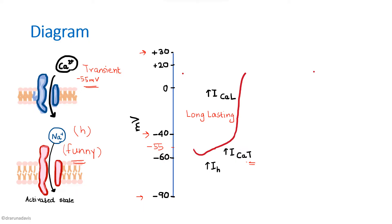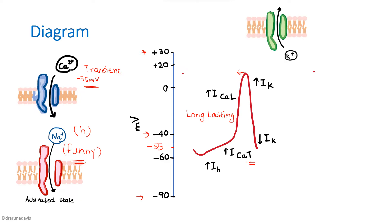The membrane potential peaks at around plus 20 millivolts, completing depolarization. Repolarization then occurs due to the opening of potassium channels causing efflux of potassium. By the end of repolarization, the potassium channel opening decreases, the potential falls, and the cycle continues — funny currents open, then transient calcium channels open, and the cycle repeats.